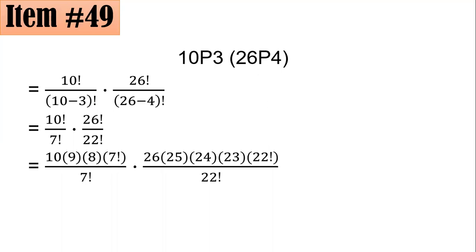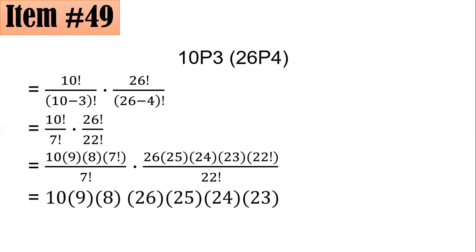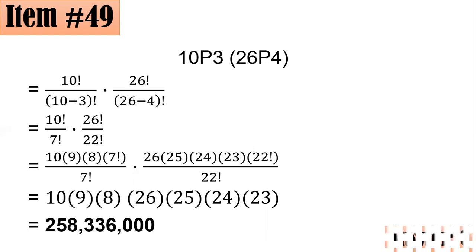The first expression simplifies to 10 times 9 times 8 (canceling the 7 factorials), and the second to 26 times 25 times 24 times 23 (canceling the 22 factorials). Multiplying all together using a calculator gives 258,336,000 possible passwords. Letter C.